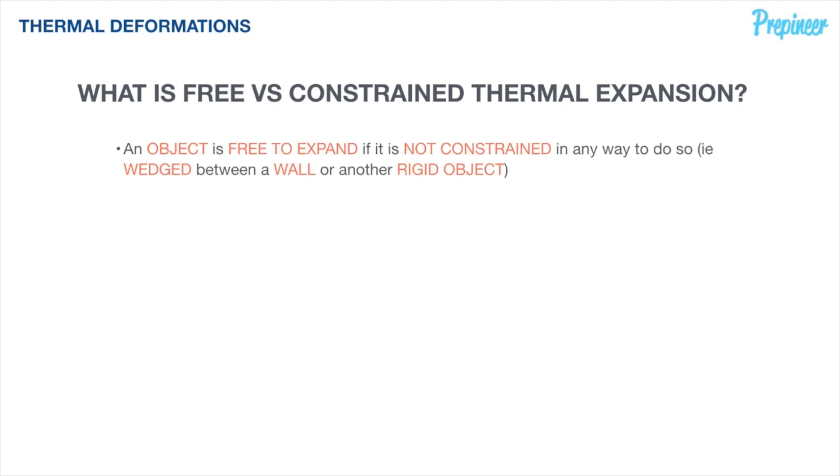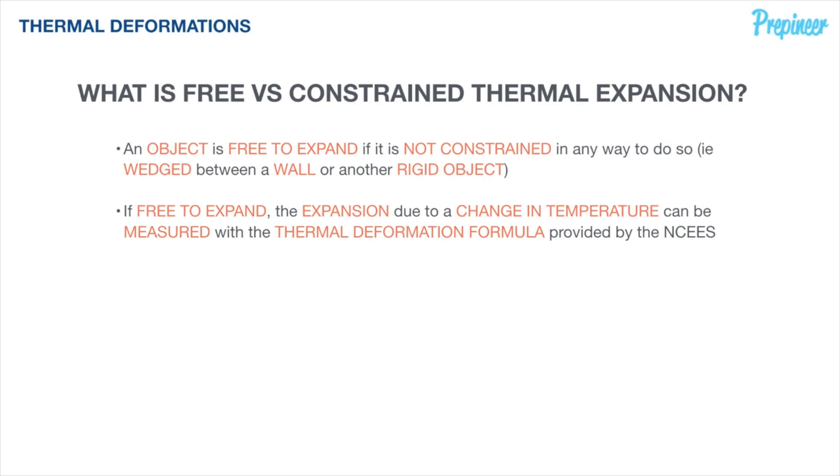If the object is free to expand, then the expansion or strain resulting from an increase in temperature can be simply calculated using the thermal deformation formula that we pulled from the NCEES reference handbook and the applicable coefficient of thermal expansion. If, on the other hand, the object is constrained so that it cannot expand, then we will need to take another approach to dealing with the expansion since there will now be internal stresses caused by the change in temperature coupled with the fact that that piece or that member is constrained from expanding even though it wants to.